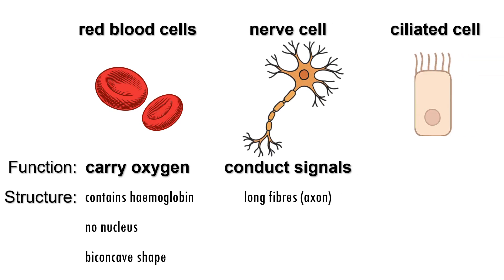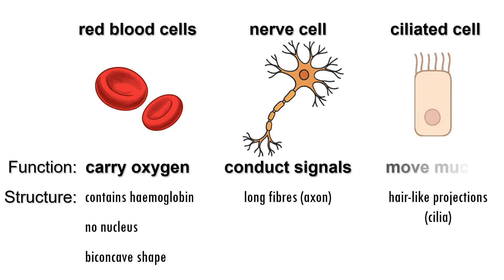The lining of the nose and windpipe are lined by ciliated cells. They have tiny hair-like projections called cilia. The cilia beat continuously in a flicking motion. This movement creates a current that moves mucus, along with trapped dust and bacteria, away from the lungs and towards the throat, where it can be expelled.